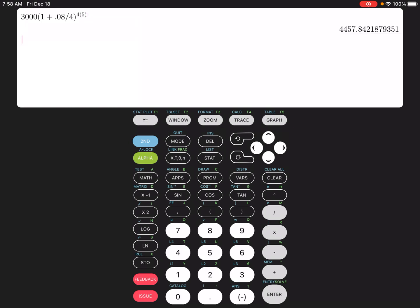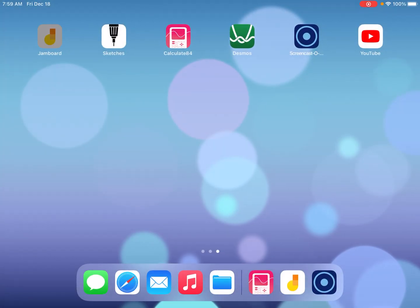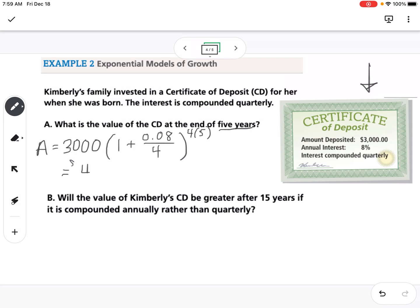And you see we get 4,457.84218, so this is money, so we want to round to the nearest cent. So on this one, it would be 84 cents. So this is going to equal $1,457.84.